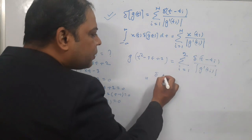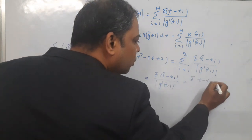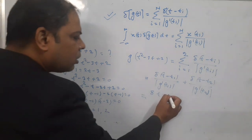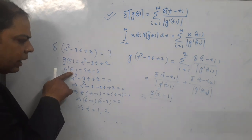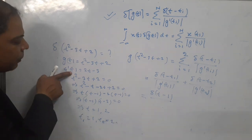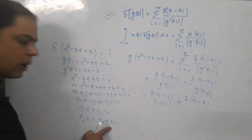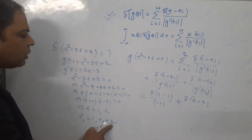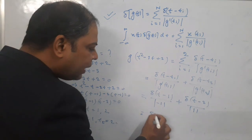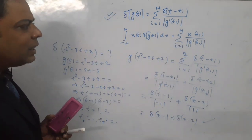With t₁ = 1 and t₂ = 2: for the first term, δ(t − 1) divided by |g'(1)| — g'(1) = 2(1) − 3 = −1, so |−1| = 1. For the second term, δ(t − 2) divided by |g'(2)| — g'(2) = 4 − 3 = 1, so |1| = 1. Both denominators are 1, so the final answer is δ(t − 1) + δ(t − 2).